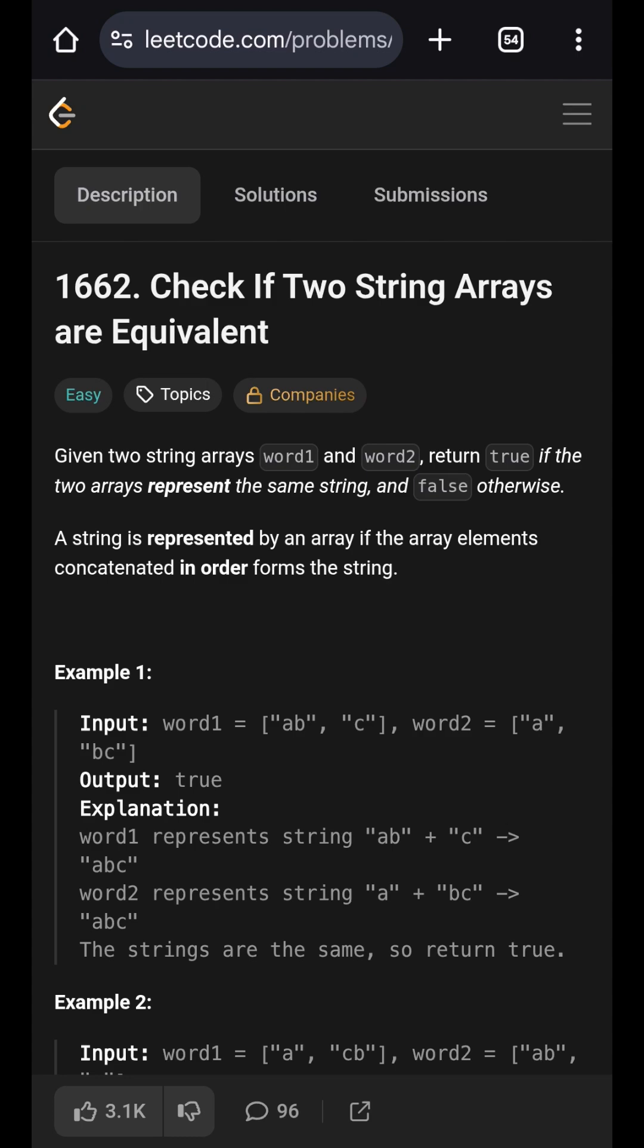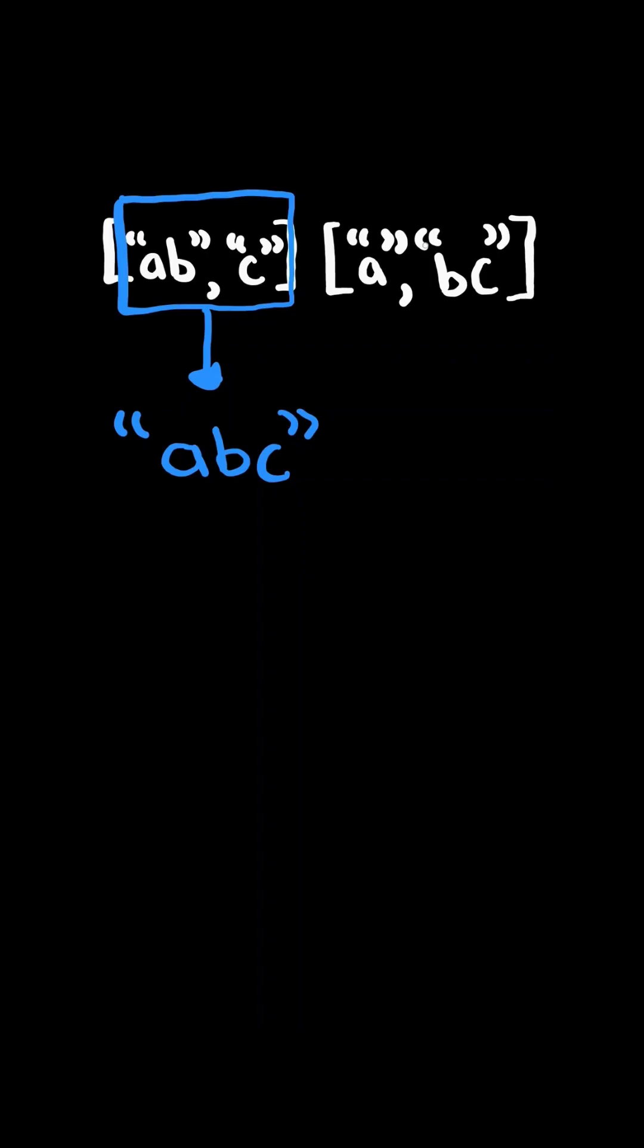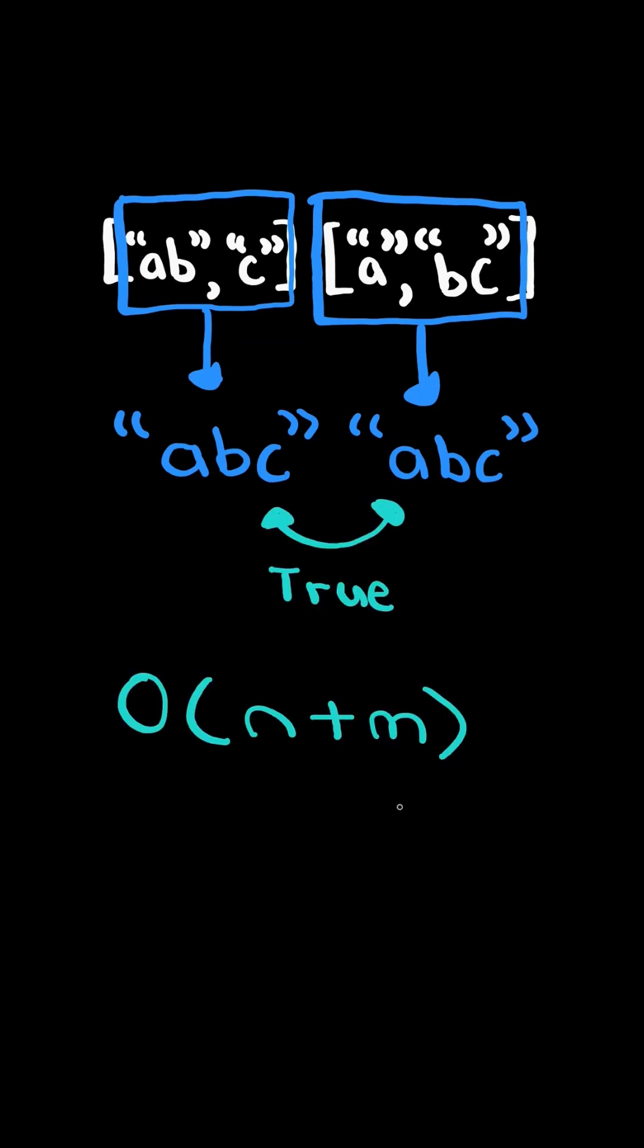Check if two string arrays are equivalent. Concatenate the first array in order and concatenate the second array in order. Return true if both the strings are equal. We will solve this in O of the length of array 1 and array 2 time and constant space.